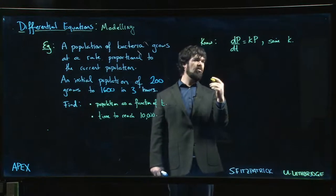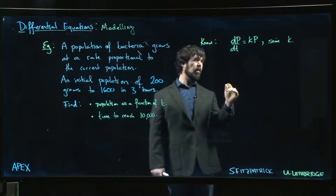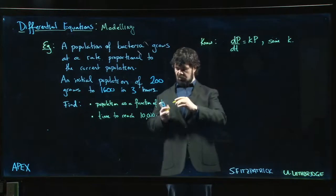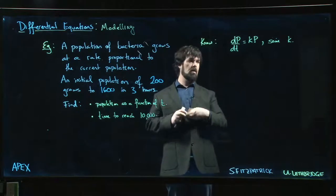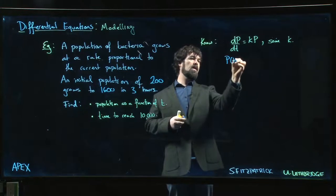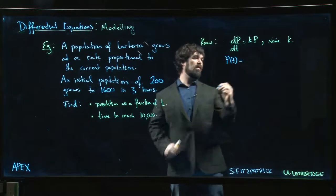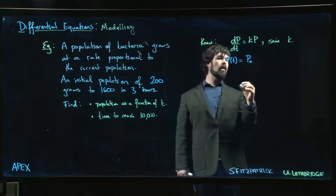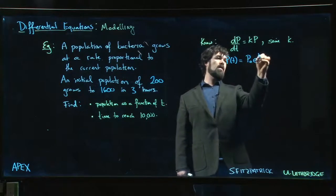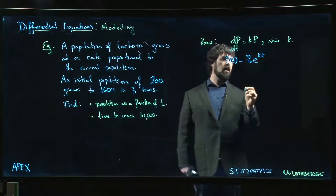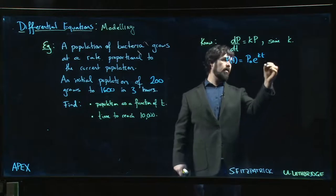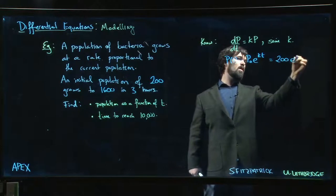We also know that the solution to this equation is p(t) is equal to an initial population p naught times e to the kt. And in fact we know what the initial population is, that's given to us: 200. So it's 200 e to the k times t.